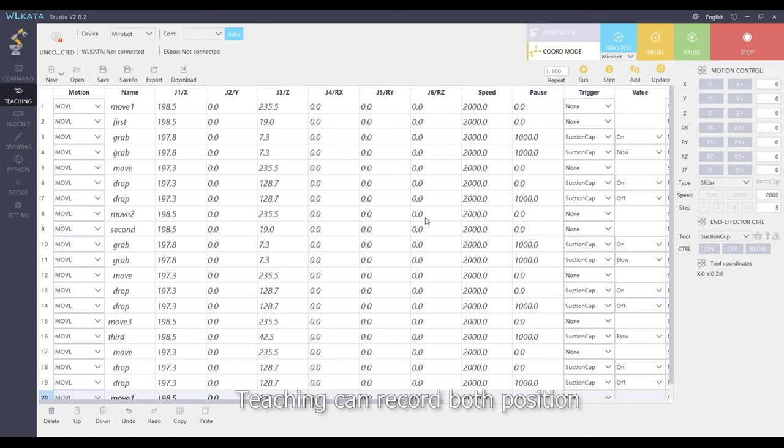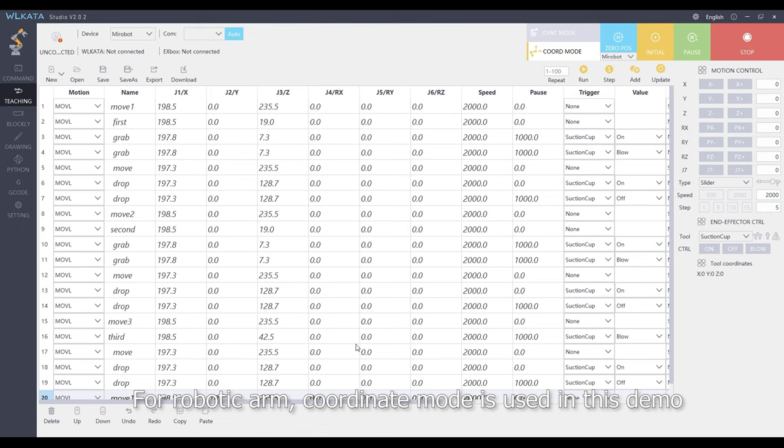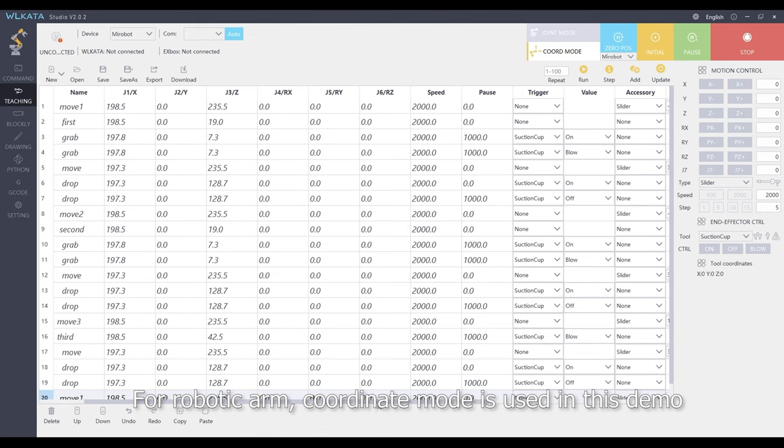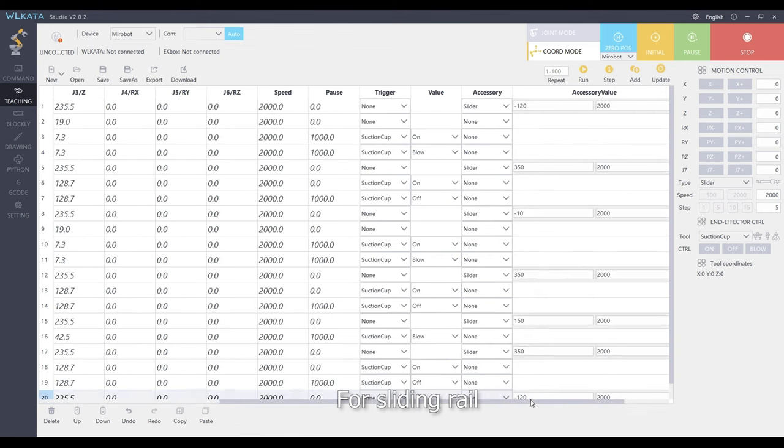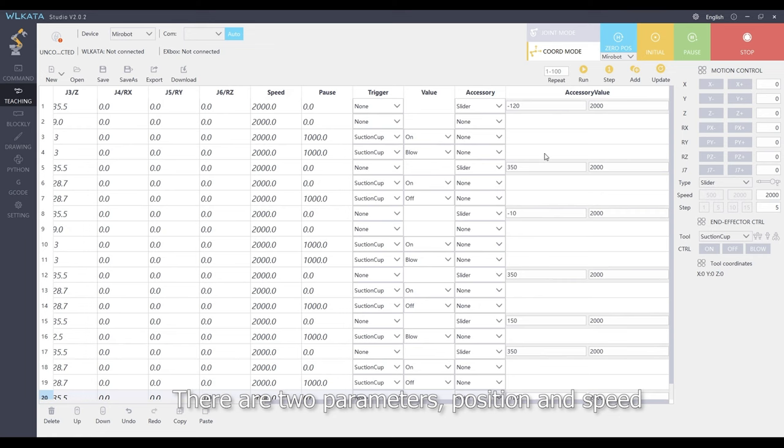Teaching can record both positions. For robotic arm, coordinate mode is used in this demo. For sliding rail, there are two parameters: position and speed.